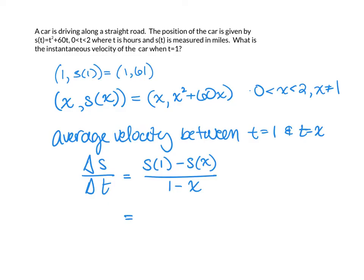So we can do s of 1 minus s of x divided by 1 minus x. And using our function for s, that means we have 61 minus x squared plus 60x. It's important here to put that in parentheses because the minus distributes over 1 minus x. So this gives us the average velocity between when t is 1 and any other point that we're calling x.